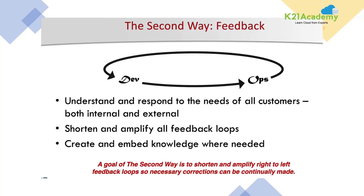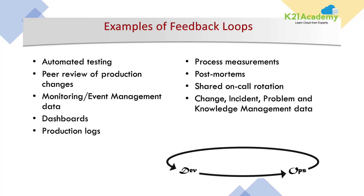The second way — feedback loops — means you should understand and respond to customers, both internal and external. You should create a lot of feedback loops and always have embedded knowledge of where and what is required. Examples include: automated testing to get testing results, peer-to-peer review for production changes, monitoring tools to understand gaps, dashboards, and logs to improve your process through measurements.